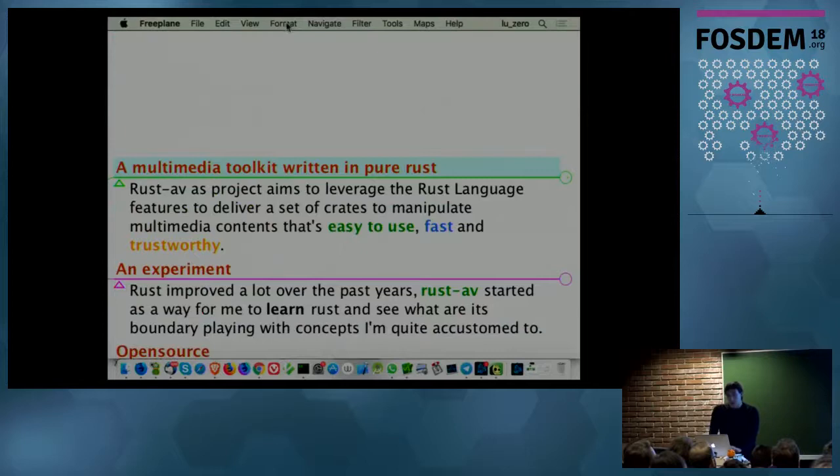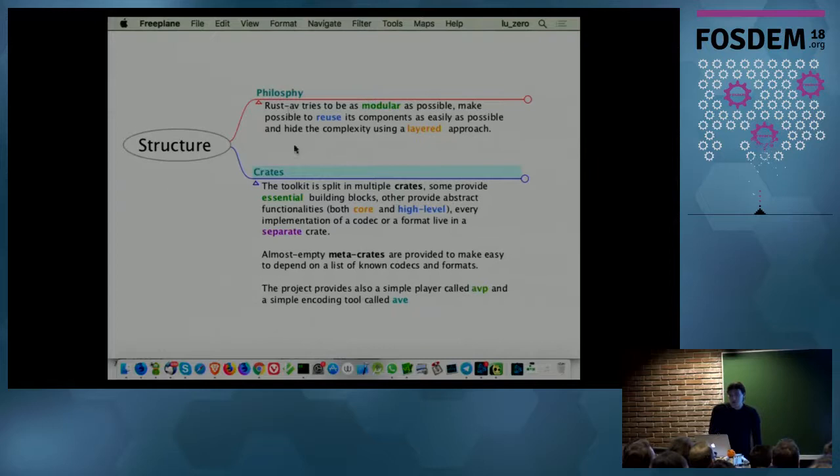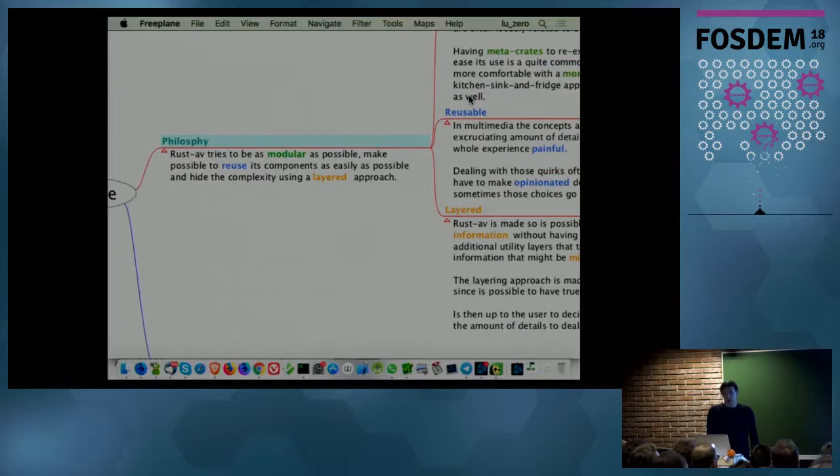So, what I did so far, the idea for the toolkit of the framework is that I'd like to have it modular. So, I want that all the code that is written for Rust-AV can be reused as much as possible. I said already, I'm trying to use a layered approach. So, if you don't care about details, you can write your player in few lines of code. If you do care about details, you can dig down as deep as possible, within reason.